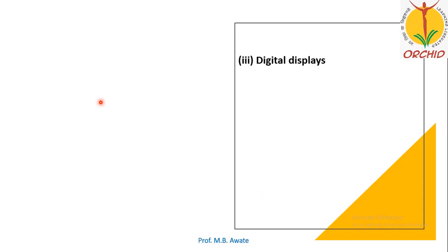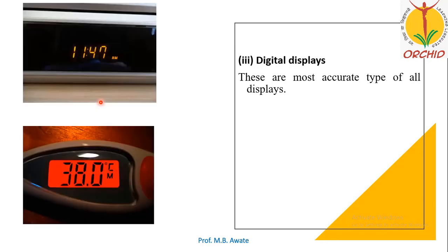Digital displays are the most accurate type of all displays, giving exact values in terms of numbers. Examples include a digital watch showing 11:47 AM, and a digital thermometer showing 38 degrees Celsius. These are examples of digital displays.